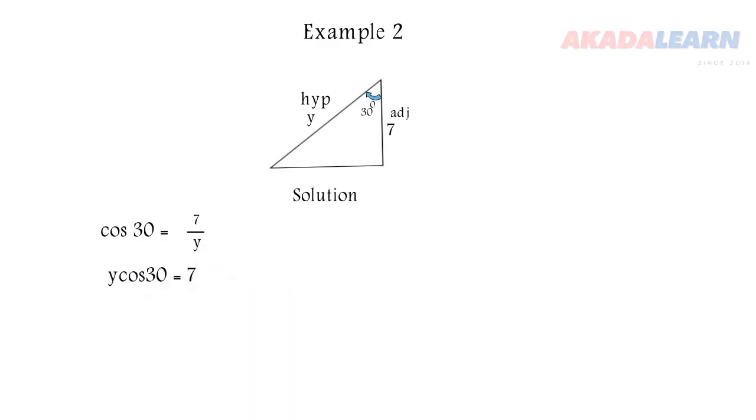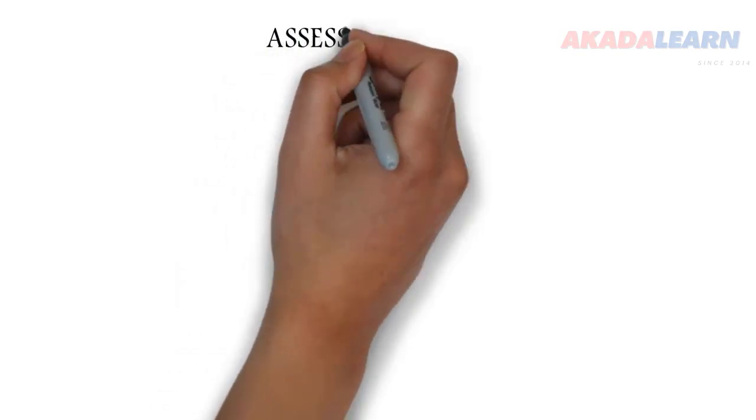So y equals 7 over cos 30, which is 7 divided by 0.8660. When we do the division, we get the value of y to be 8.08 centimeter.